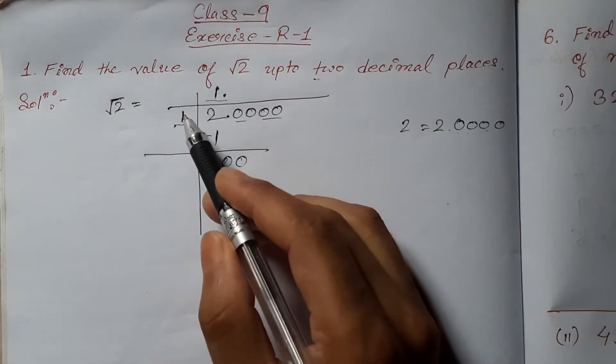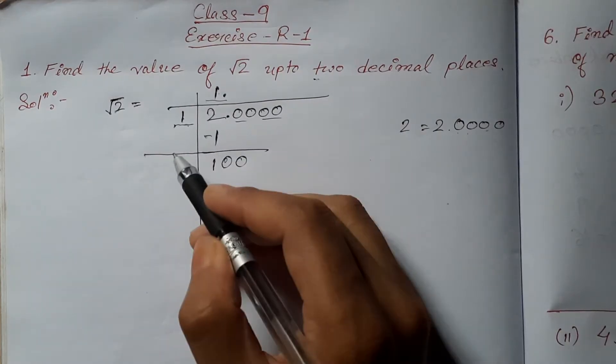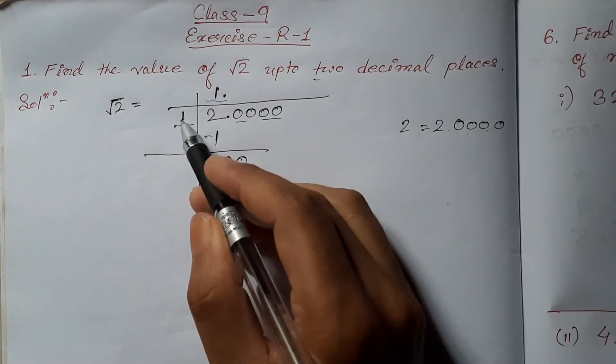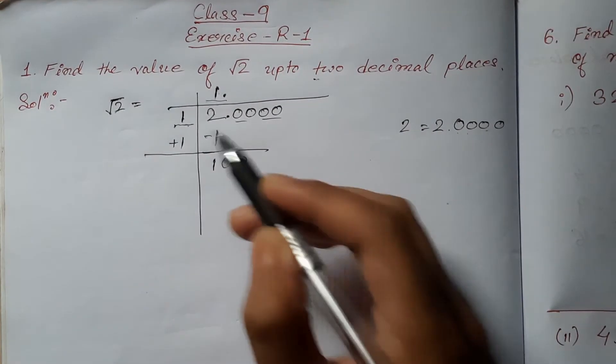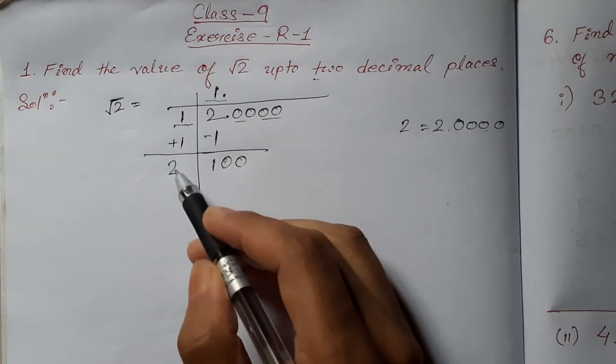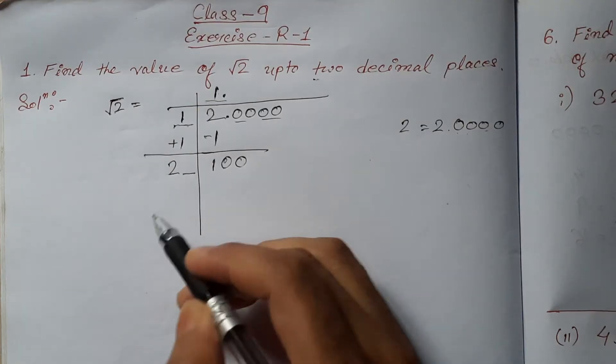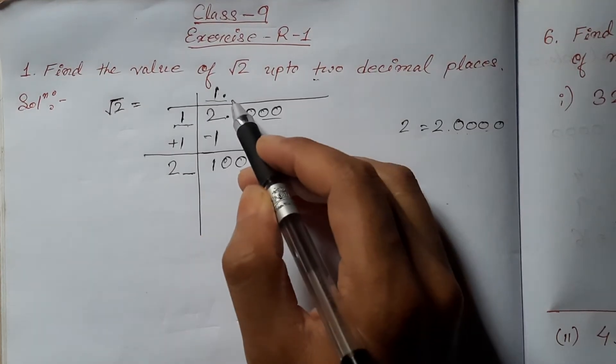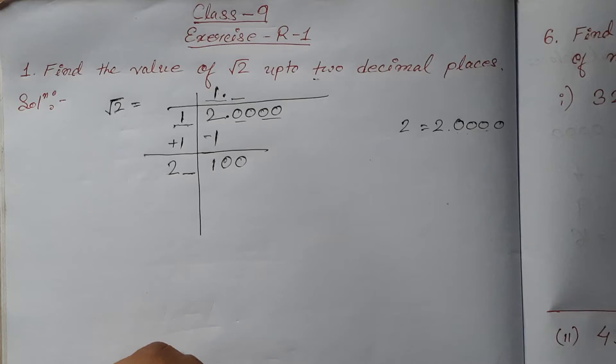Now, the next step is to add the divisor part with the same number. The number was 1, so I am adding it with 1. 1 plus 1 is 2. Now, after 2, we have to take a number, and that same number must be taken in the quotient place also.